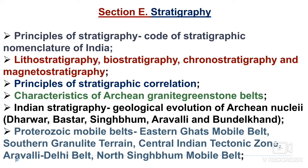Section E is stratigraphy. Topics include principles of stratigraphy, codes of stratigraphic nomenclature of India, lithostratigraphy, biostratigraphy, chronostratigraphy, and magnetostratigraphy — these are important and you can get a question from this area. Principles of stratigraphy and correlation, characteristics of Archaean granite-greenstone belts, and Indian stratigraphy — in which you have to study the geological evolution of Archaean nuclei: Dharwar, Bastar, Singhbhoom, Aravalli, and Bundelkhand cratons.